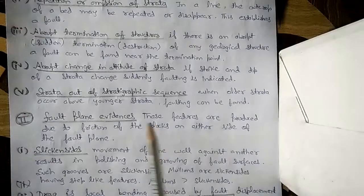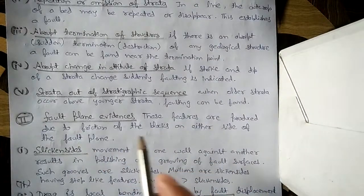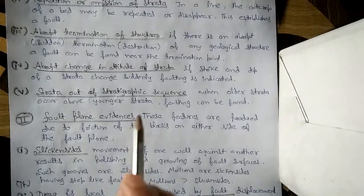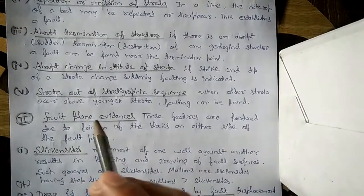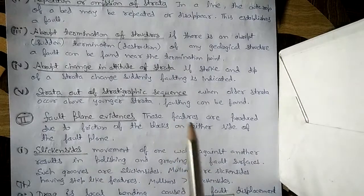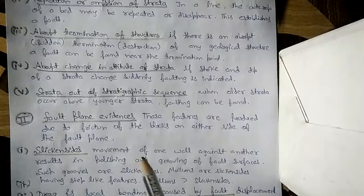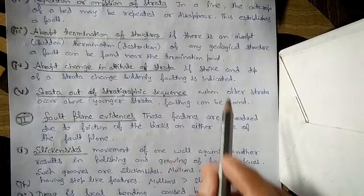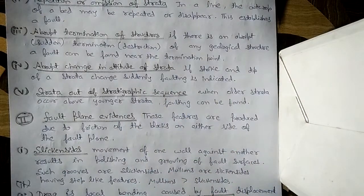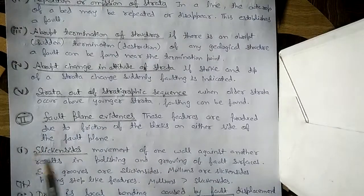The fifth geological evidence is strata out of stratigraphic sequence. In normal sequence, older rock beds lie below and younger rock beds lie above them. But if we find the reverse — older rock beds above and younger rock beds below — faulting can be inferred. We now move to the second categorization: fault plane evidences.